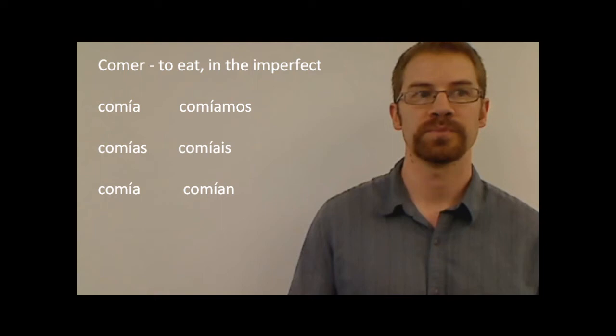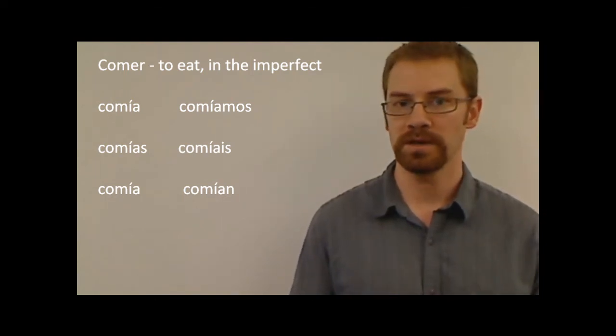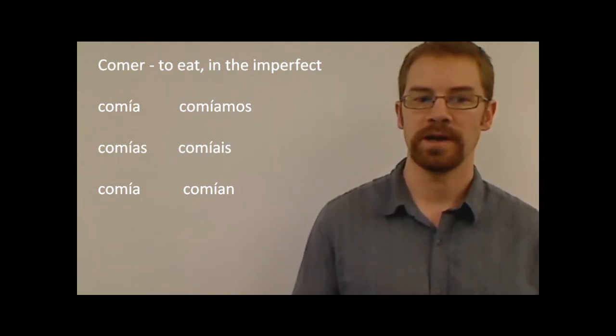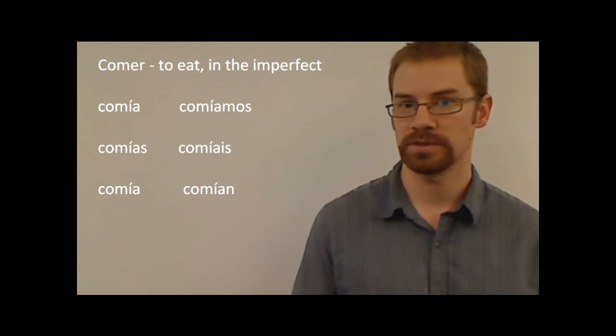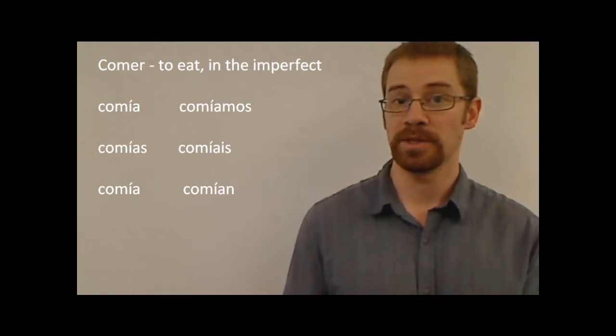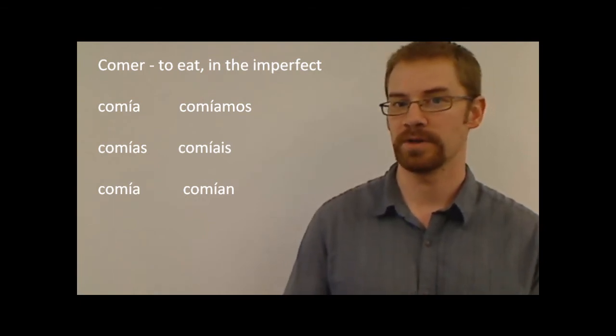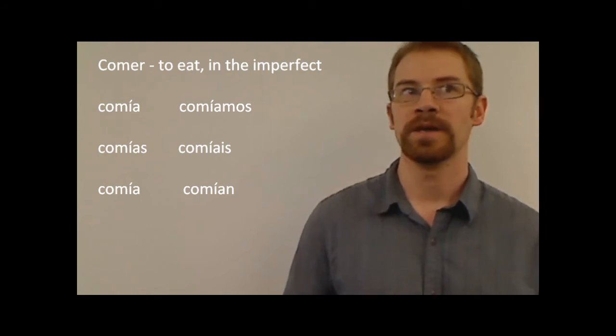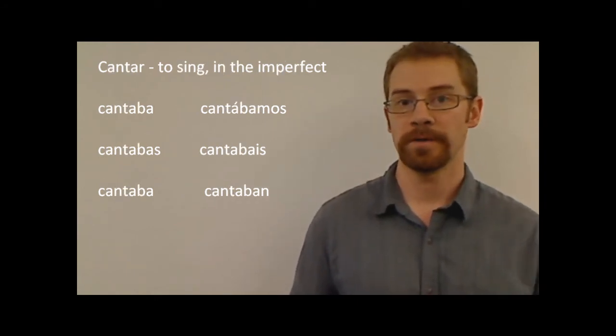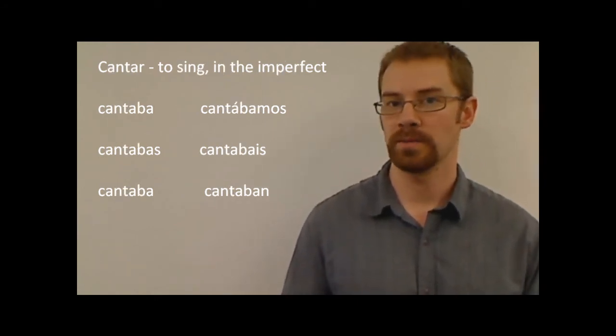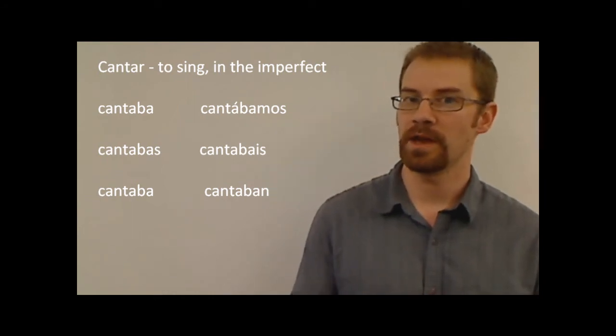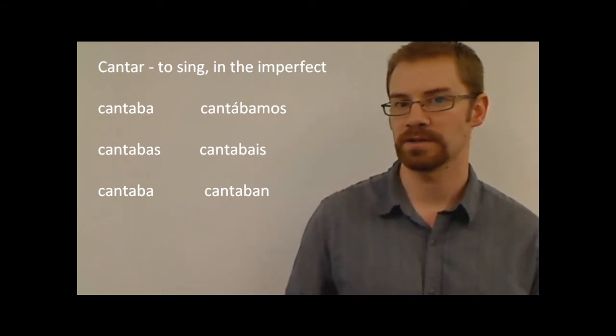You'll also notice that ER and IR verbs over the I on the comía, for example, there's an accent mark. There are accent marks on all of them in that position. While accent marks could be difficult, if you can remember that there are accent marks on all of them right there, you'll know it. And then for the AR verbs like cantar on the nosotros form, cantábamos, there was an accent mark over that A right there. It's just on that A. The rest of them don't have accent marks.